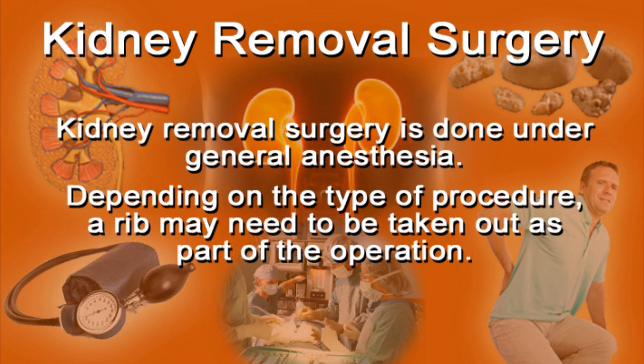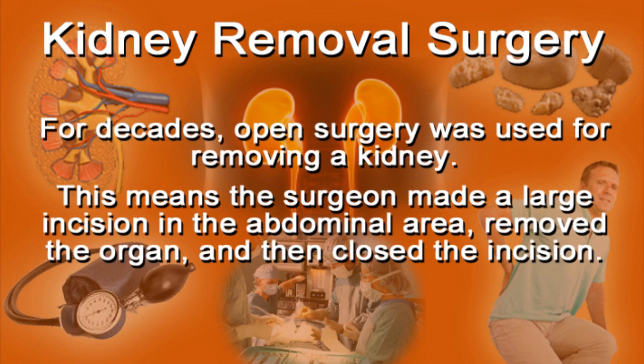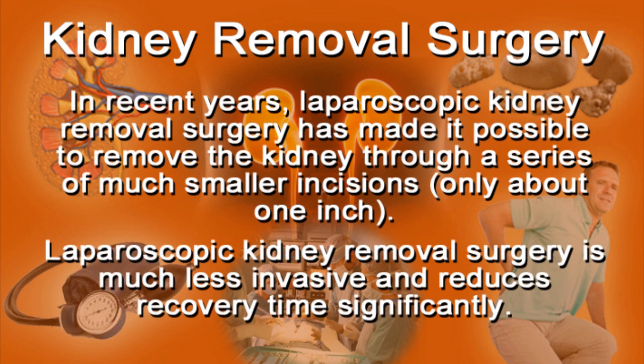Kidney removal surgery is done under general anesthesia. Depending on the type of procedure, a rib may need to be taken out as part of the operation. For decades, open surgery was used for removing a kidney, meaning the surgeon made a large incision in the abdominal area, removed the organ, and then closed the incision. But in recent years, laparoscopic kidney removal surgery has made it possible to remove the kidney through a series of much smaller incisions — only about one inch each.